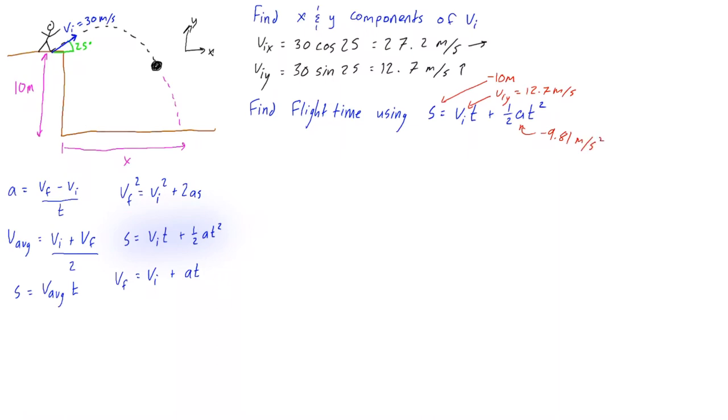Let's fill these values in. We have negative 10 meters is equal to 12.7 meters per second times time, plus one half times negative 9.81 meters per second squared times t squared.